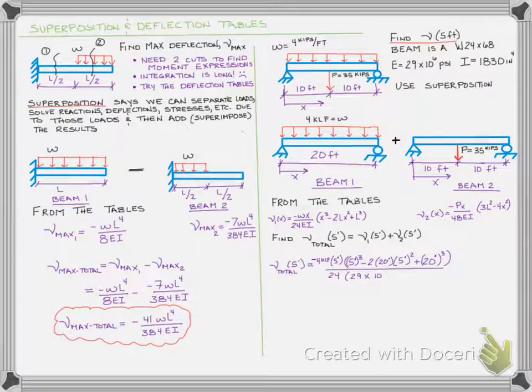In the denominator, we want to make sure that we pay attention to the units of E. E was given as 29 times 10 to the 6 PSI, but since our loads are in kips, I went ahead and changed that to 29 times 10 to the 3 KSI. Our kips cancel, but we're going to have inches squared on the bottom and length cubed in feet on the top. So we want to convert that feet cubed on the top to inches, so we're going to multiply the whole thing by 12 inches per foot quantity cubed.